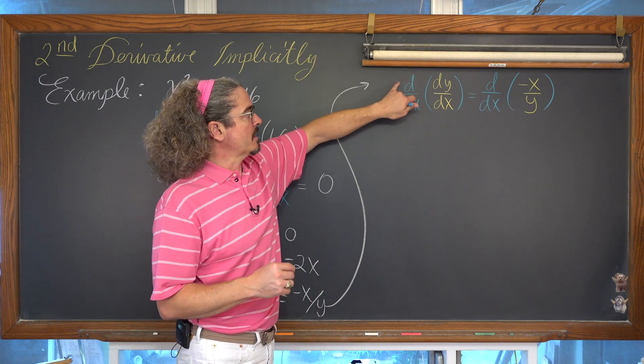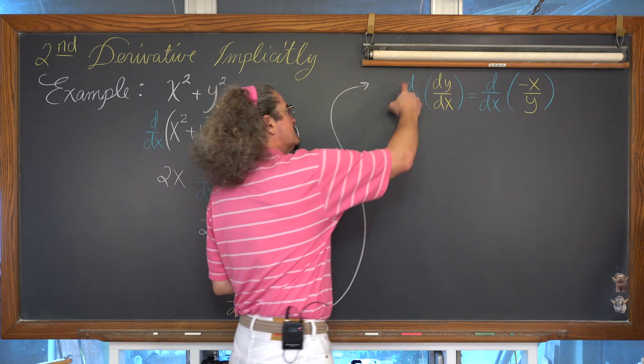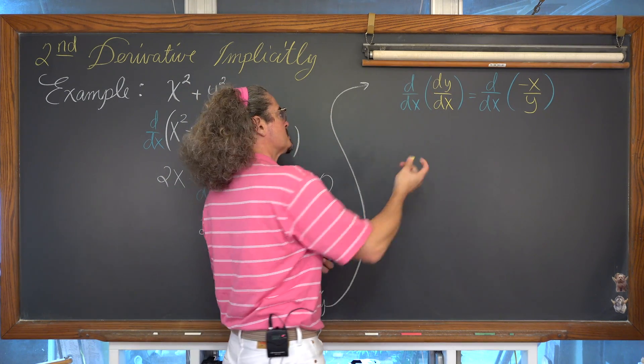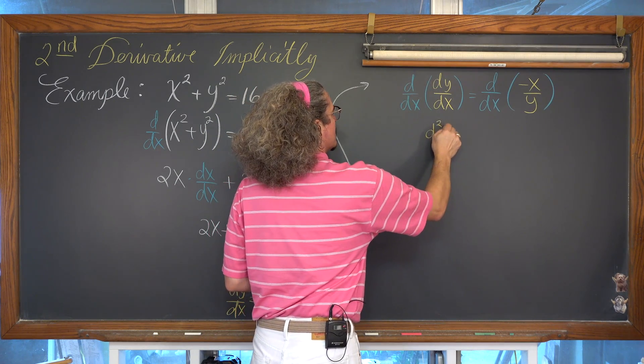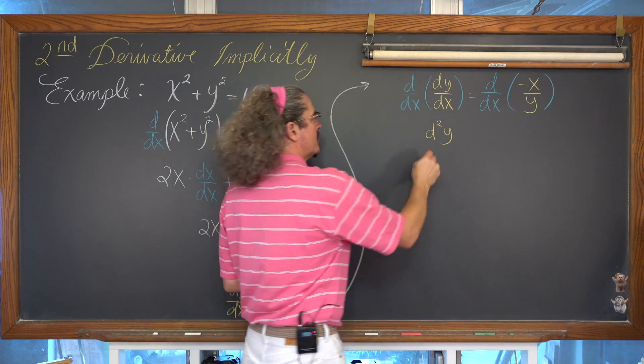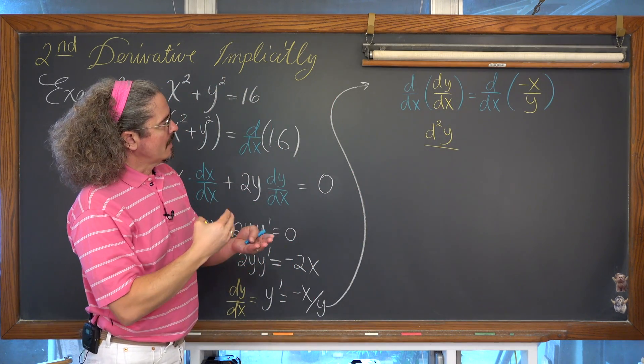And now we're going to come along and apply another derivative with respect to x. Well, it appears that we have like a d times d. So our second derivative notation is going to be kind of like d squared y, and in the denominator we have a dx times dx.